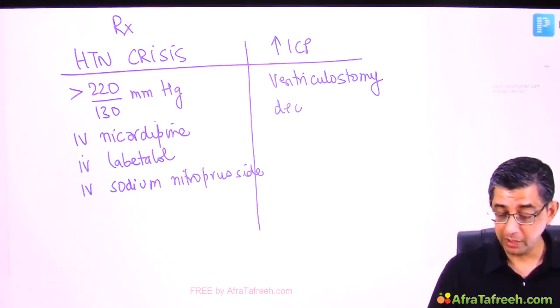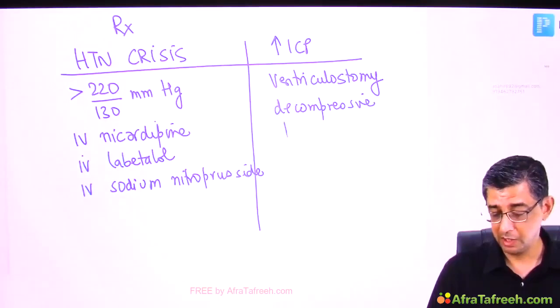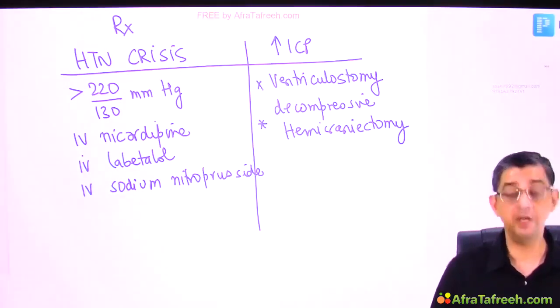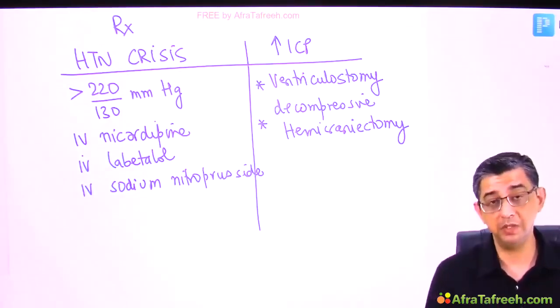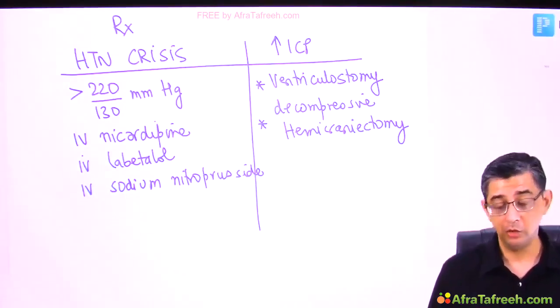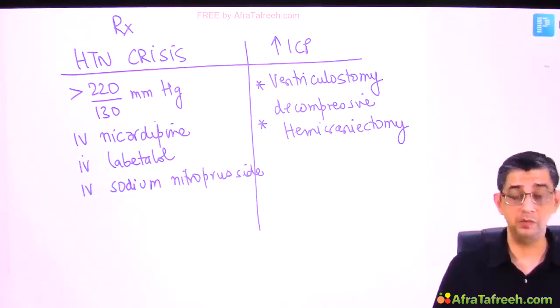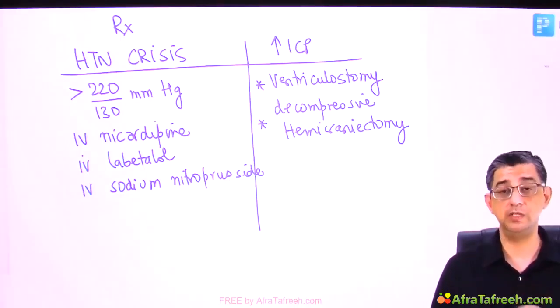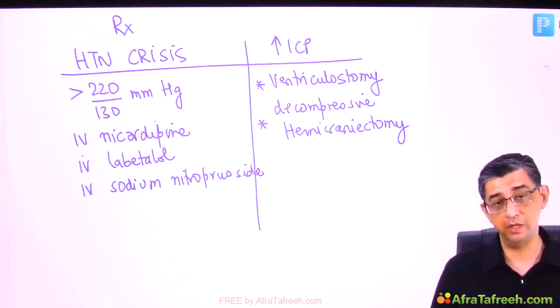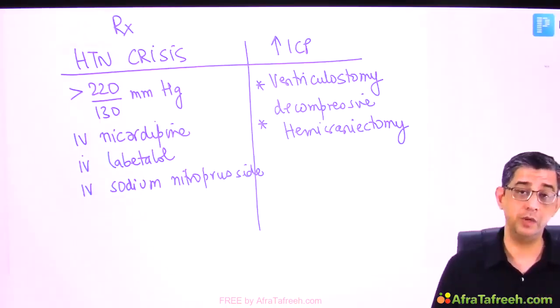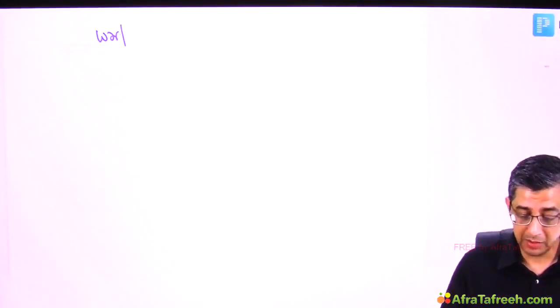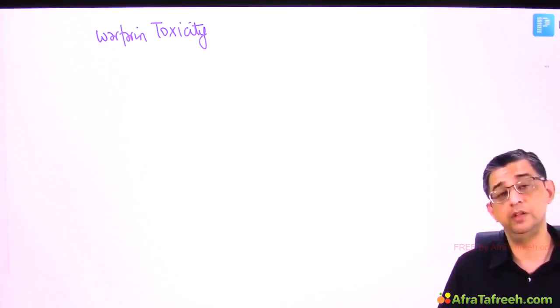If ventriculostomy fails, decompressive hemicraniectomy may be needed. Never give excessive reassurance to relatives in brain hemorrhage — patients can deteriorate very fast. The two key scenarios: a hypertensive patient with brain hemorrhage, and a non-hypertensive, non-diabetic elderly patient with CNS bleed due to cerebral amyloid angiopathy.